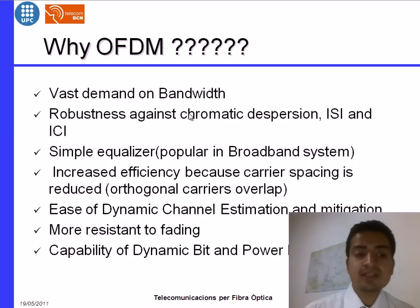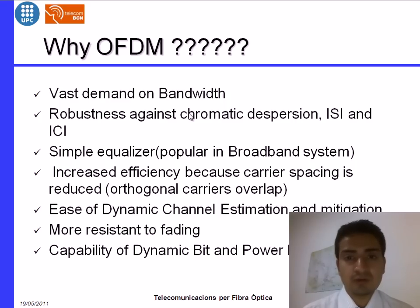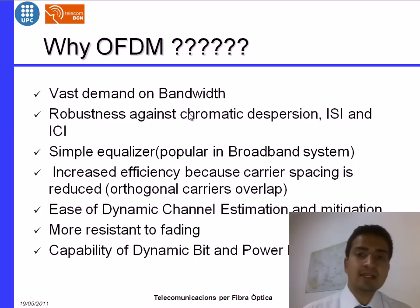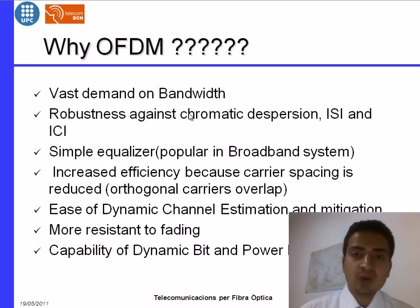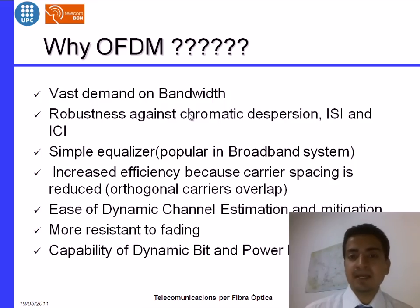Inter-symbol interference and inter-carrier interference is avoided in OFDM by using the cyclic prefix. One key advantage of this multiplexing is that we can transmit a huge amount of data — 10 GB, 20 GB, or 100 GB — and at the receiver side we need only a simple equalizer to decode all the data. OFDM has increased efficiency because the sub-carriers are overlapping.